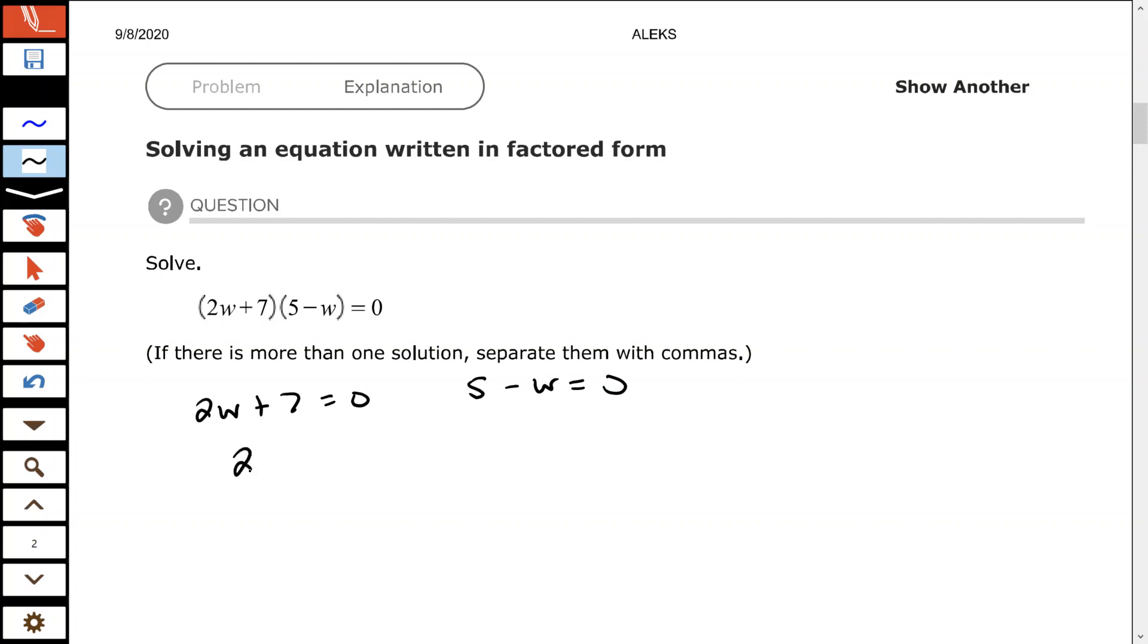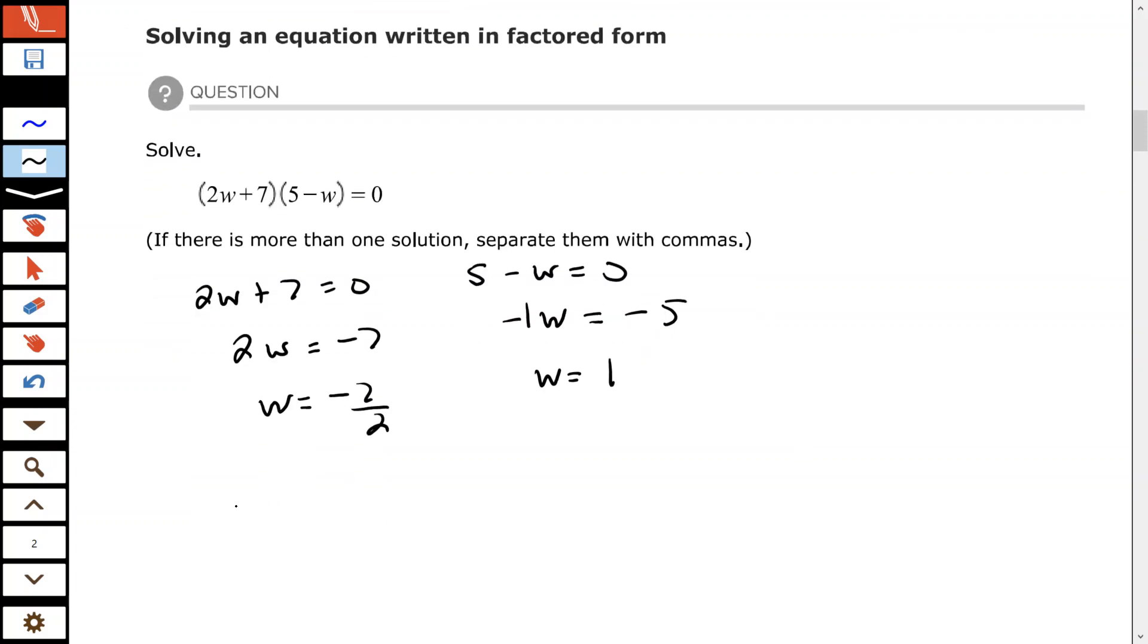Subtract 7 from each side. Divide both sides by 2, negative 7 halves. Here subtract 5 from each side. So that's understood to be negative 1w remaining on that left-hand side. Divide both sides by negative 1 to isolate the w. Negative 5 divided by negative 1 is positive 5. So my two answers are negative 7 halves or 5.